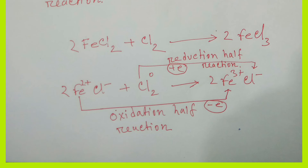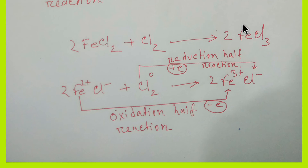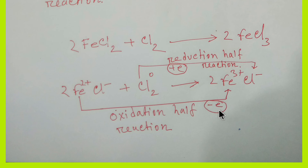Let me take another example. Here we have ferrous chloride, where the oxidation state of iron is 2 plus and the oxidation state of chlorine is zero. On the product side, ferric chloride, the oxidation state of iron is 3 plus. This is the oxidation half-reaction — we see an increase in oxidation state, meaning the releasing of electrons. This is the reduction half-reaction — chlorine is accepting electrons, going from zero to negative one.